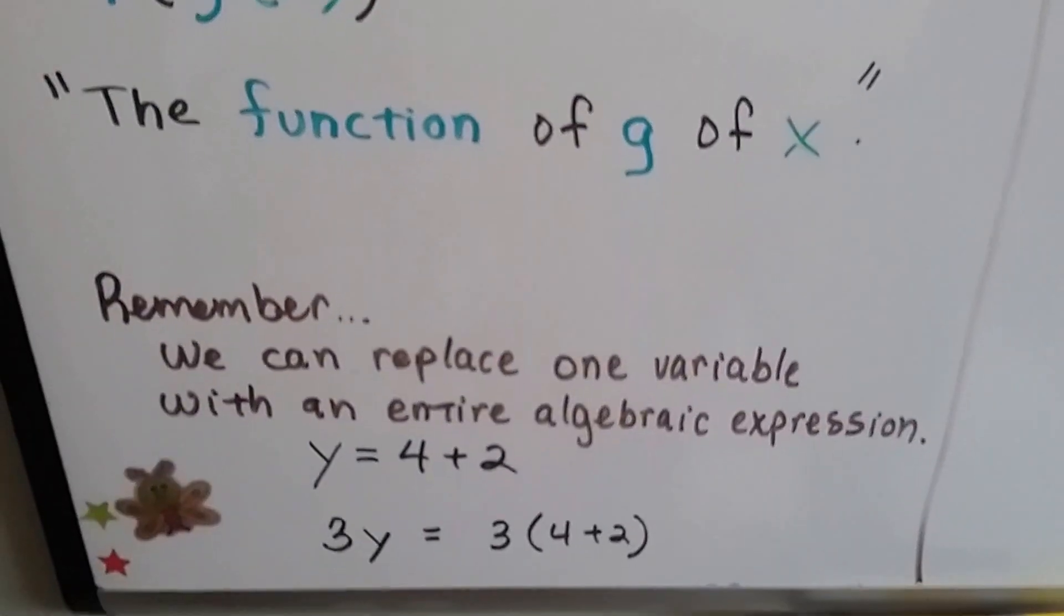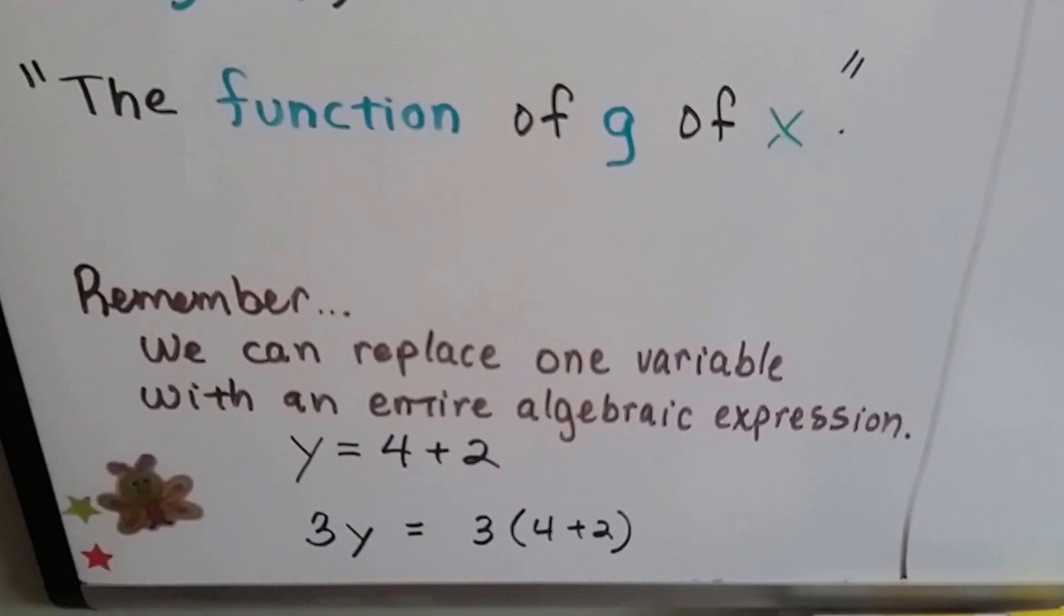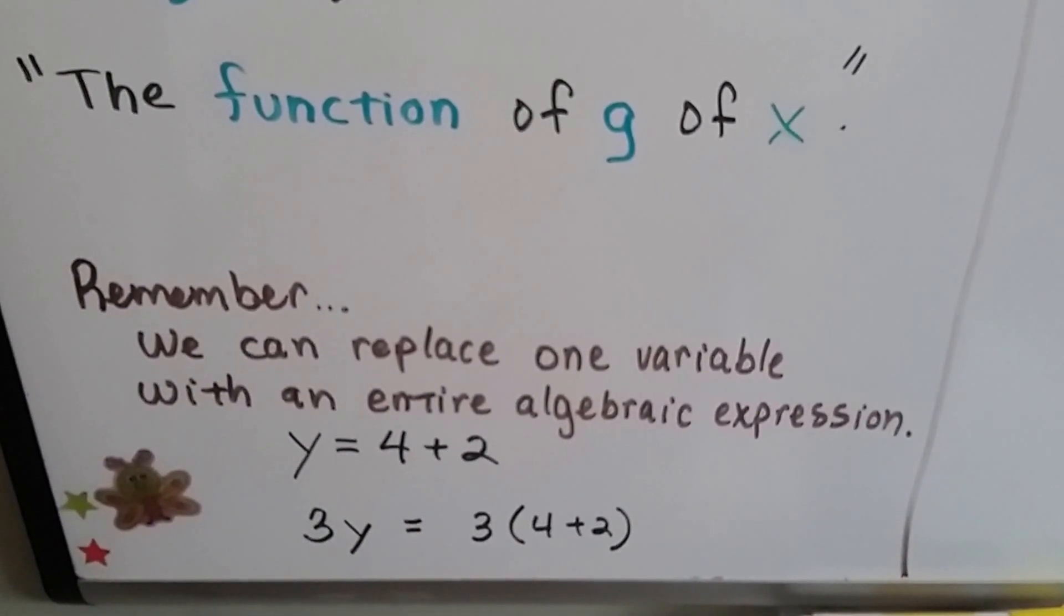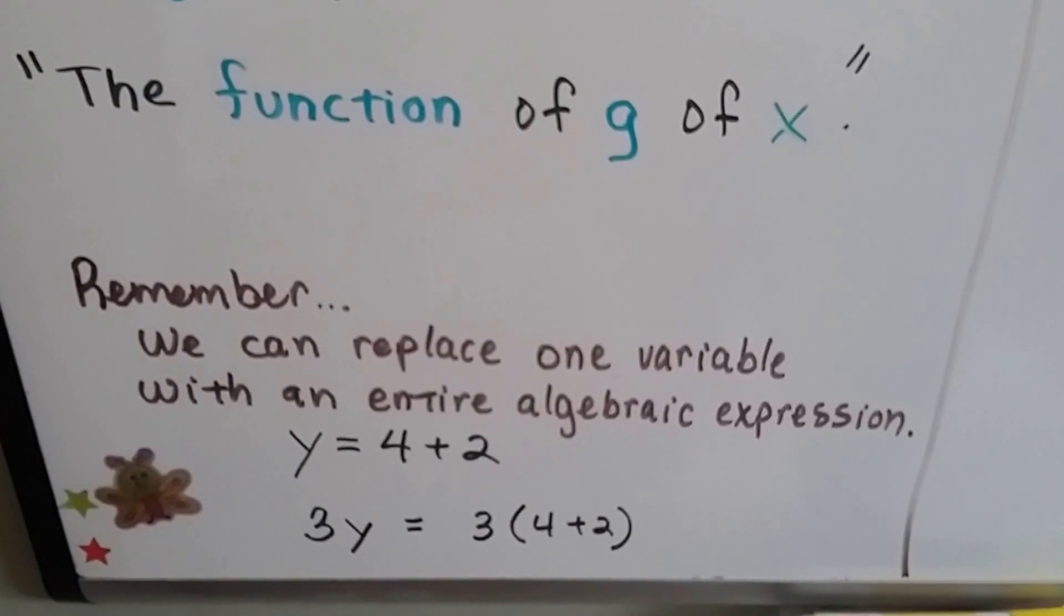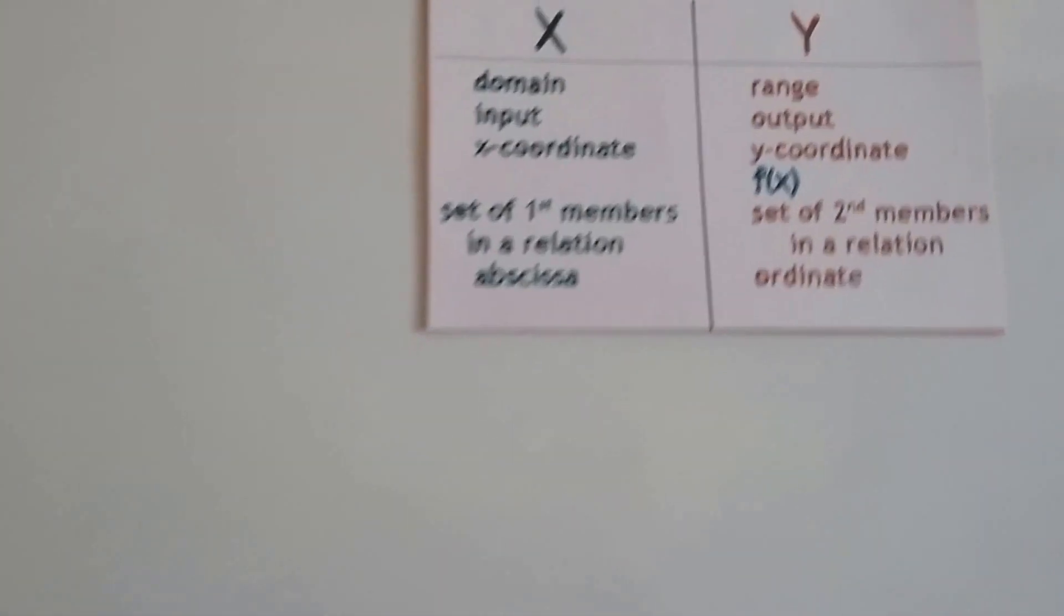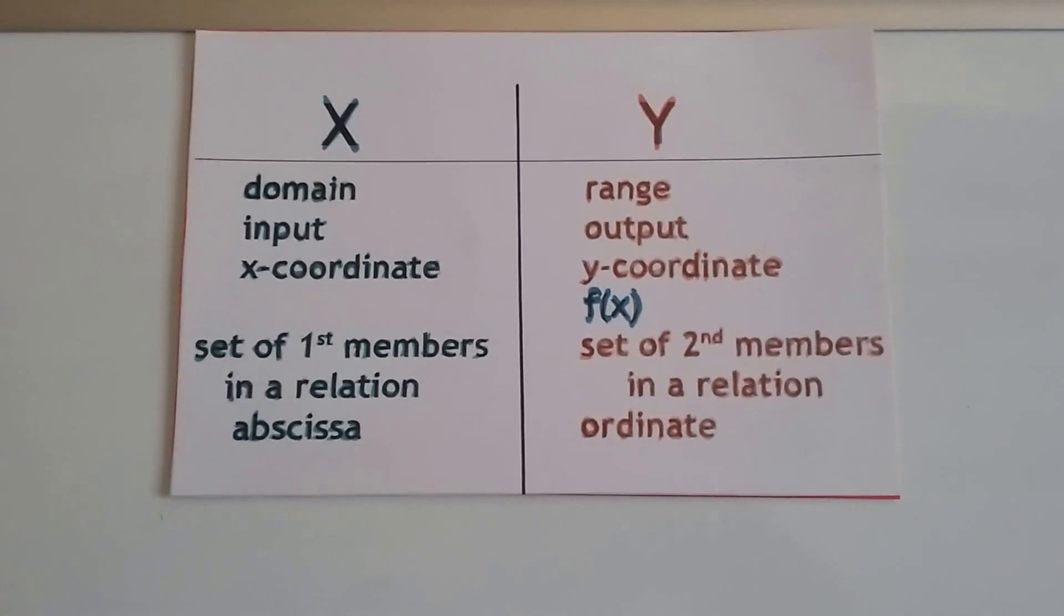Now remember, we can replace one variable with an entire algebraic expression. If we know that y is equal to 4 plus 2, then 3y equals 3 times 4 plus 2. So keep that in mind. I want to also remind you again, and some of you may be getting tired of this, but others may appreciate it.